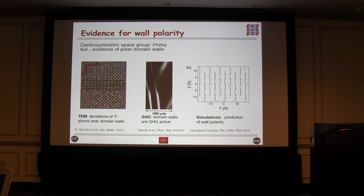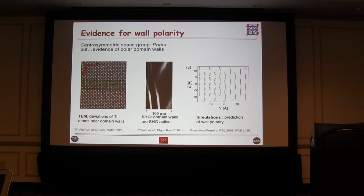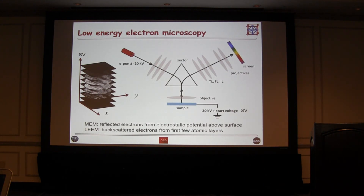These are the two ferroelastic domains. You can also get a response using second harmonic generation, and this basically means that there's symmetry breaking happening at the domain wall. Theoretical calculations show there is in fact a net polarization running along the domain wall. However, these are to a certain extent indirect, and so what we'd like to do is actually detect directly this polarity.